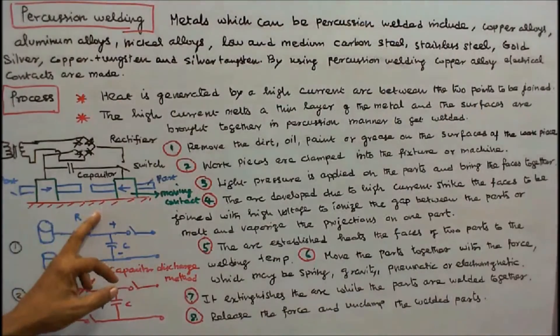Number seven: it extinguishes the arc while the parts are welded together. Number eight: release the force and unclamp the welded parts. This is the process of percussion welding.